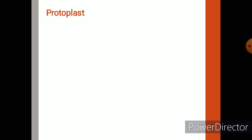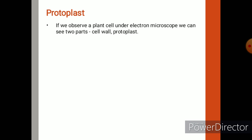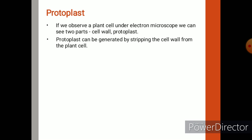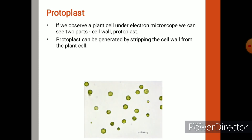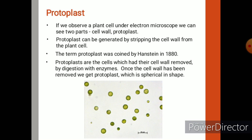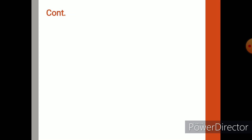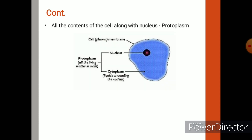Let us know about protoplast. If we remove a plant cell wall completely by using some cellular enzymes, we can get a spherical shaped structure that is called protoplast. These protoplasts are also called naked cells. The spherical protoplast is bounded by cell membrane. The term protoplast was coined by Hanstein.